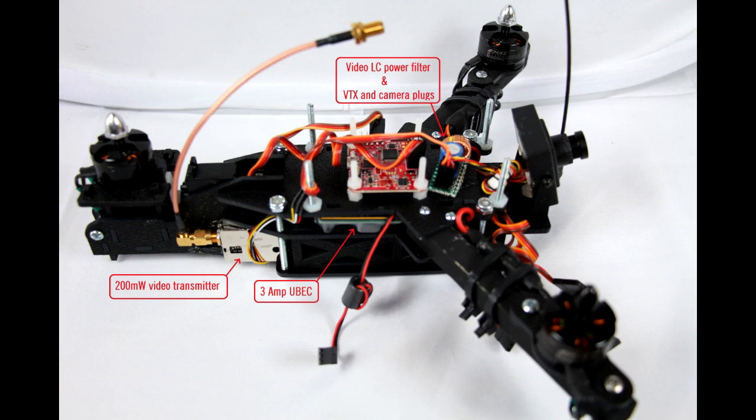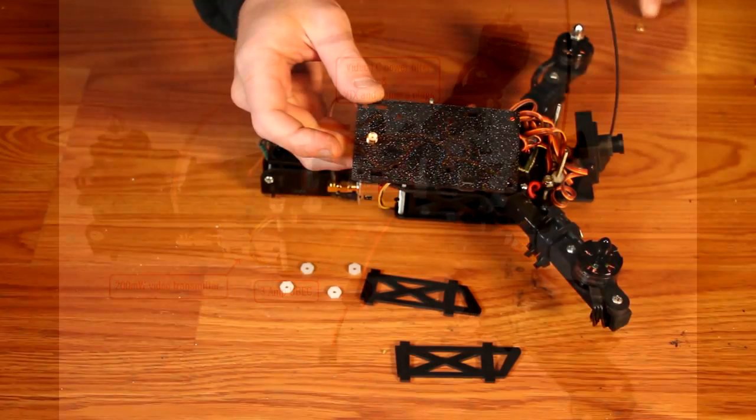I highly recommend using a UBEC, simply because the servo on a tricopter works extremely hard—much harder than it would on a fixed-wing aircraft—and thus it will end up drawing a lot of amperage. Internal UBECs on the speed controls tend to overheat and burn up. This is obviously a bad situation, so if you can get away with using a UBEC, please do it.